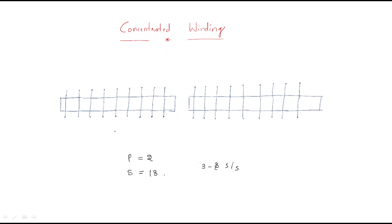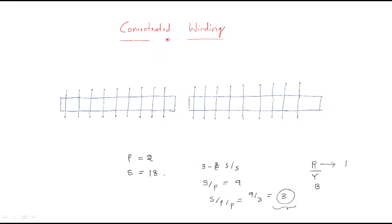In a three-phase system, slots per pole equals nine, and slots per pole per phase equals nine divided by three, which is three. So in distributed winding, we have R-slot, Y-slot, and B-slot — three slots per phase. But in concentrated winding, R-phase has only one slot, Y-phase has only one slot, and B-phase has only one slot.